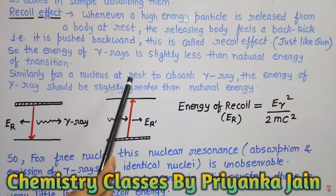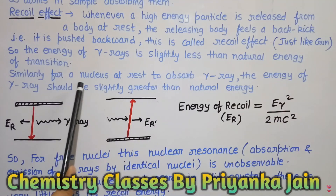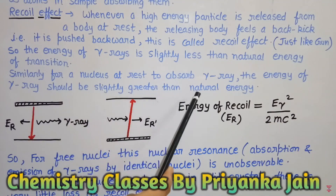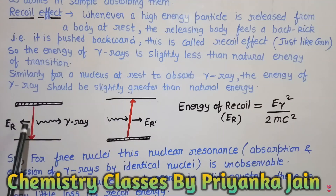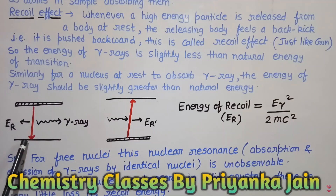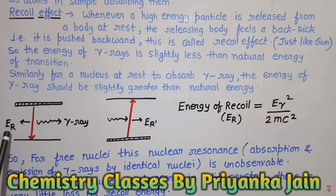Higher mass means less recoil energy. For free nuclei, nuclear resonance — absorption and emission of gamma rays by identical nuclei — cannot be observed due to this recoil loss. But when the nucleus is embedded in a solid crystal, there is very little recoil energy loss. So the nucleus is embedded in a solid crystal to achieve recoil-free emission and absorption.